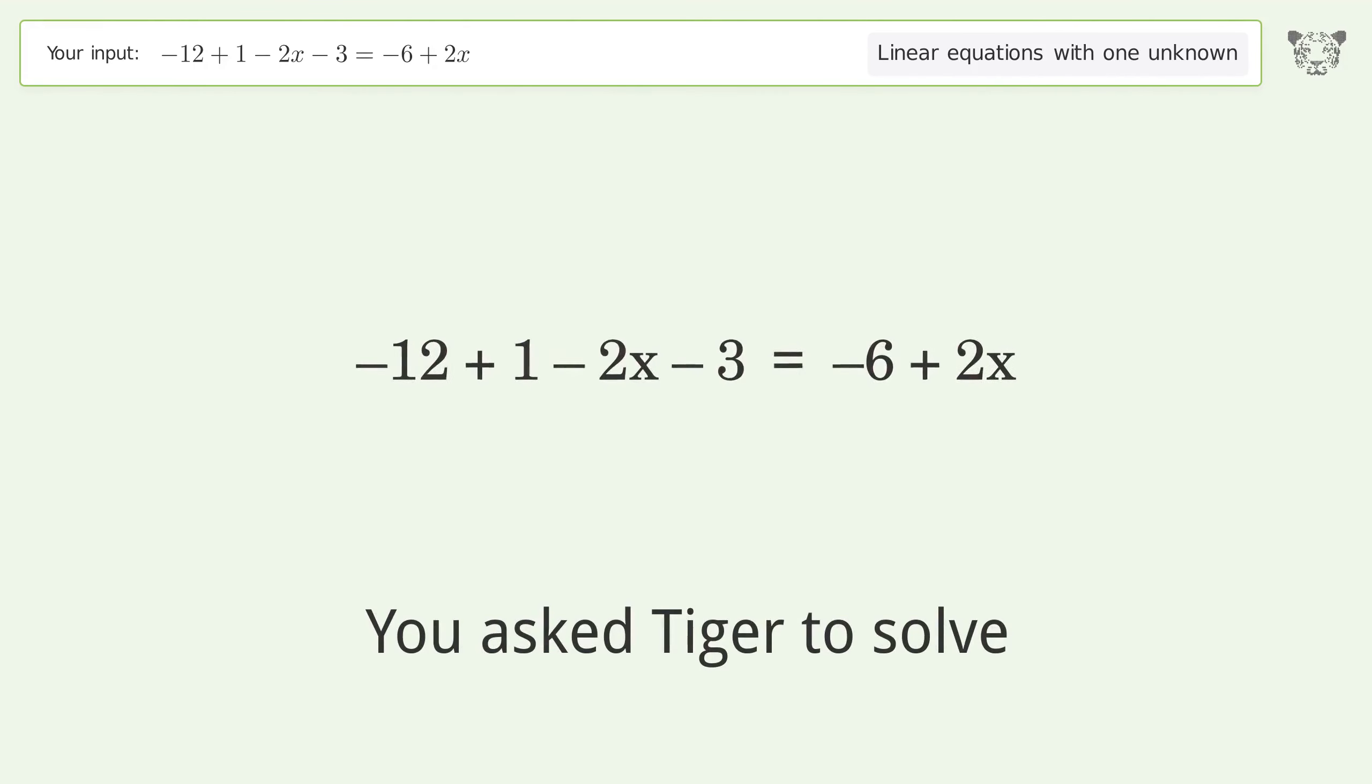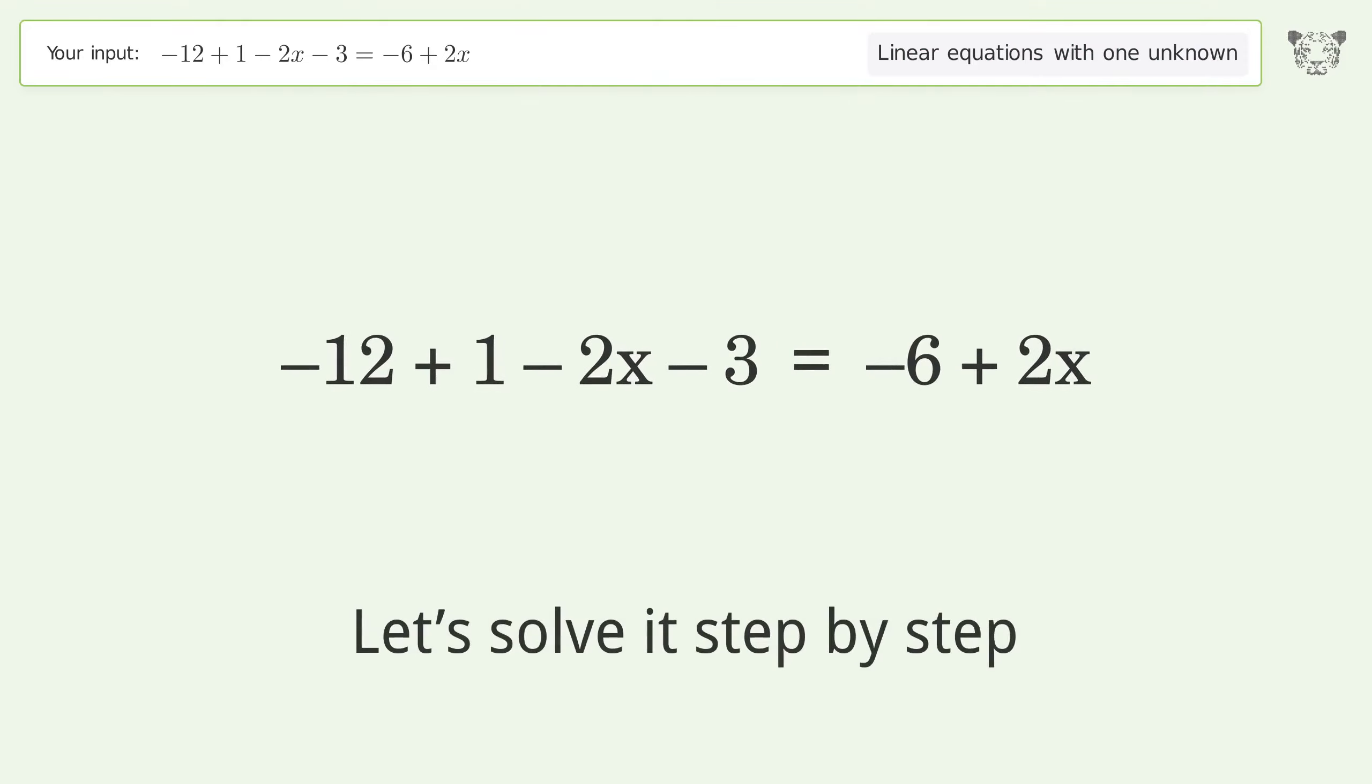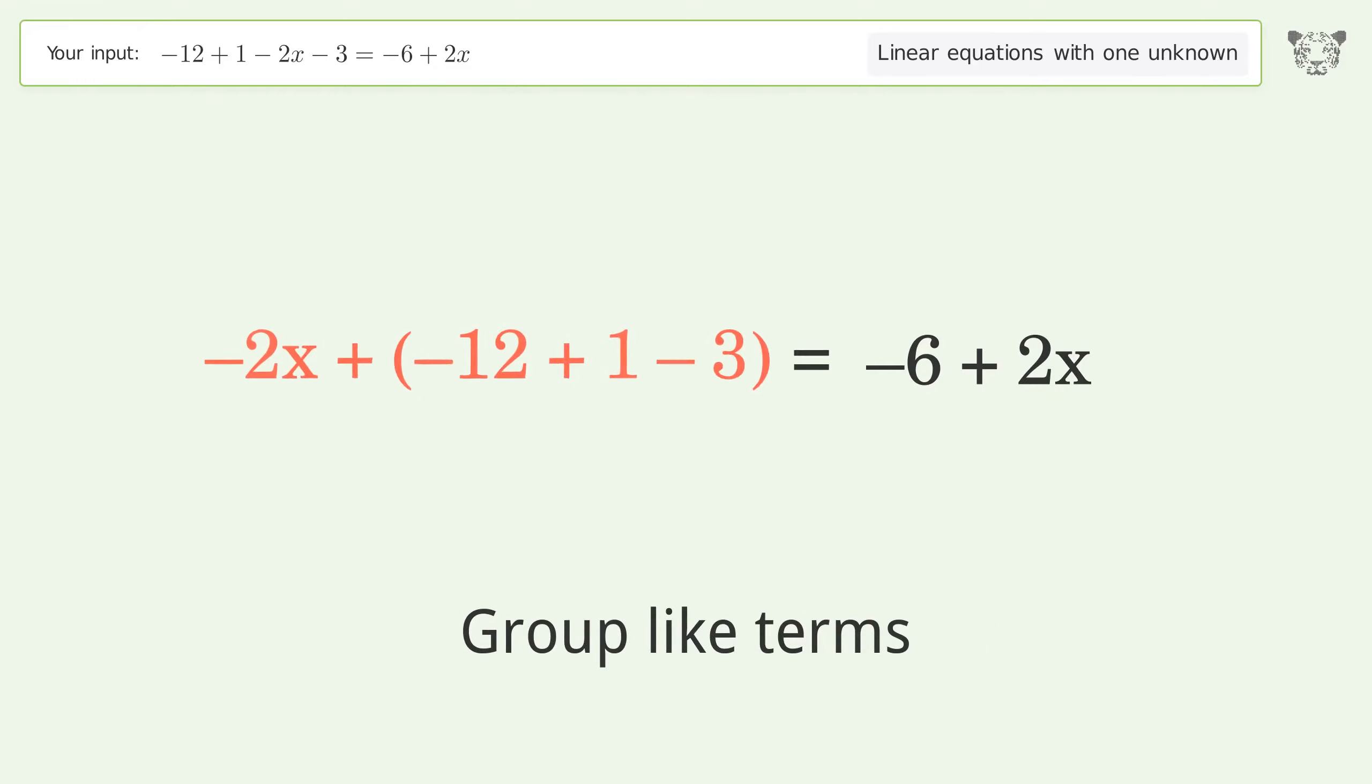You asked Tiger to solve this linear equation with one unknown. The final result is x equals negative 2. Let's solve it step by step. Simplify the expression, group like terms, simplify the arithmetic.